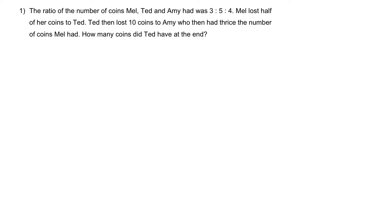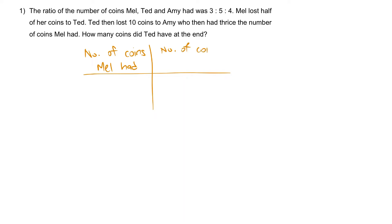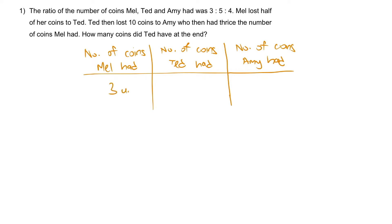Since this is a ratio question, we're going to use a ratio table — number of coins Mel had, to number of coins Ted had, and last, number of coins Amy had. At the beginning, they had 3 units to 5 units to 4 units.